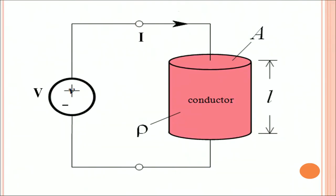This is a schematic diagram to explain Ohm's law. You can see a conductor of length L. We are applying a potential of V across it, and this is causing a flow of electric current I through it.